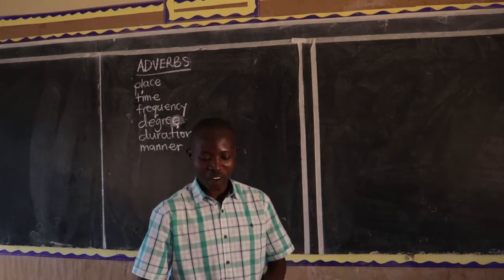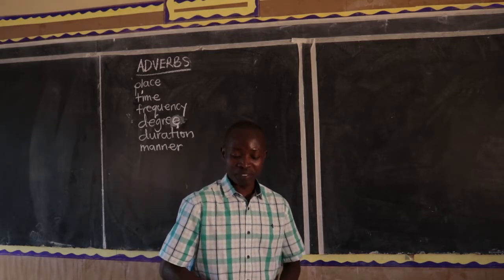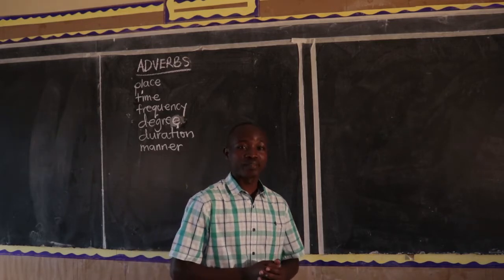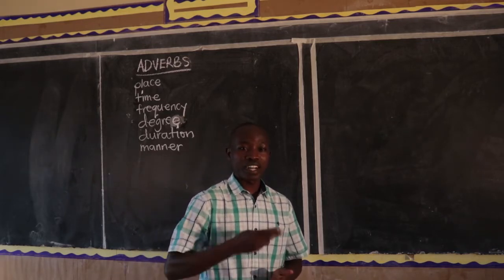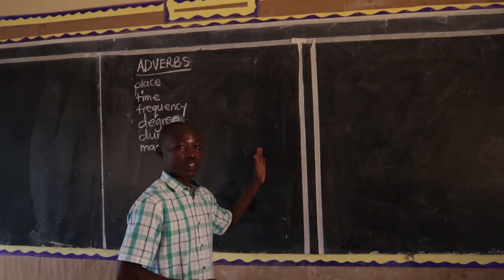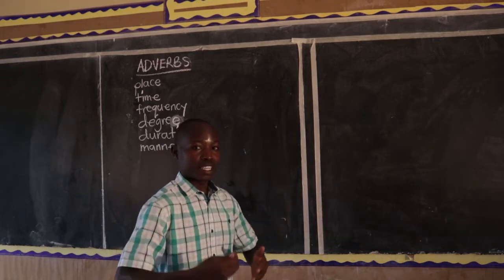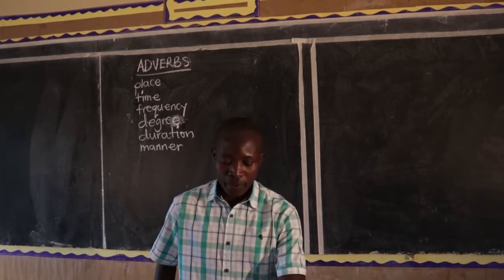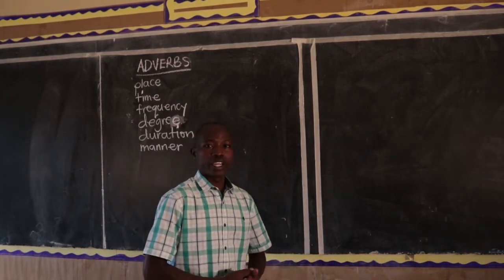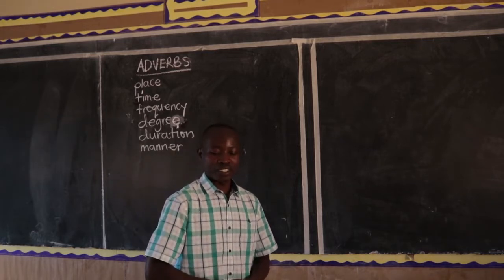I normally like beginning with a spelling activity. I would like you to write the following words very fast — get a pen and a book. I would like to check your spelling. Remember, in English, spelling is one of the important aspects; children find challenges with spelling. Write the following words. Number one, write the word 'truly', from the word 'true'. Jesus was truly a son of God.